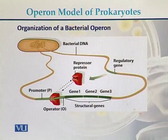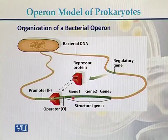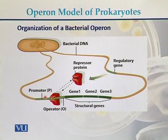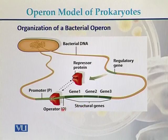In this diagram we can see the structural genes — gene 1, gene 2, gene 3 — along with an operator region and a promoter region. So collectively, structural genes, operator, and promoter are called a bacterial operon.